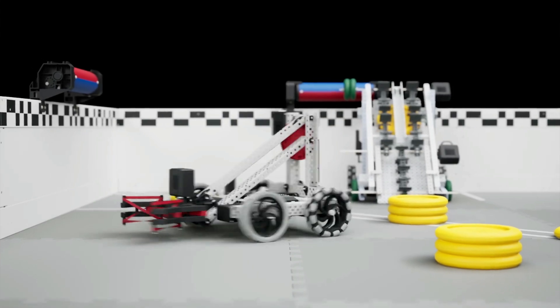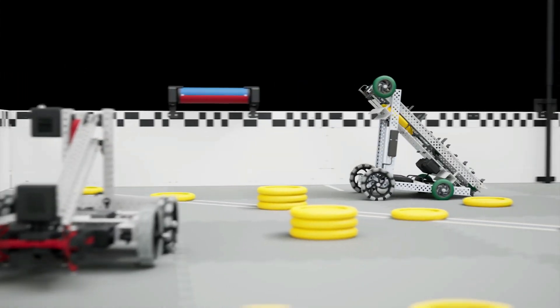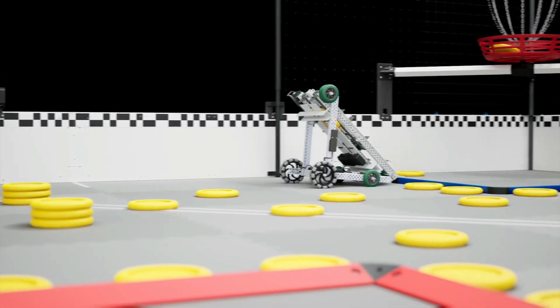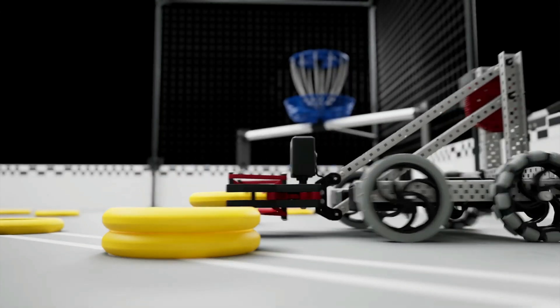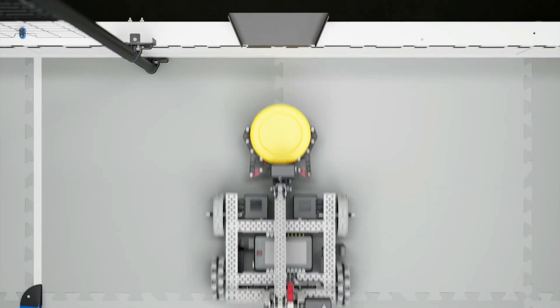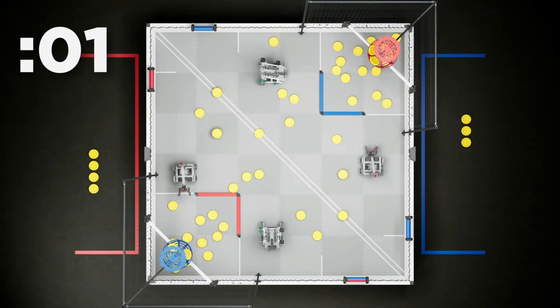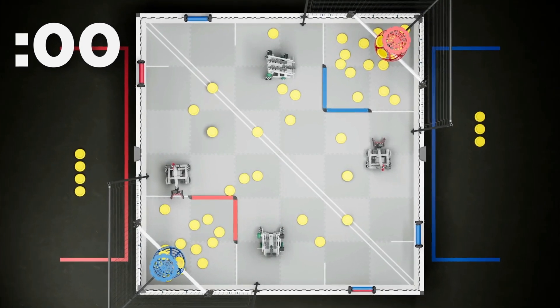The 1 minute 45 second driver control period begins once the autonomous bonus winner has been determined. During the driver control period, robots can pick up discs from the ground or receive match load discs through the loader. As the clock winds down, it's time for the end game.